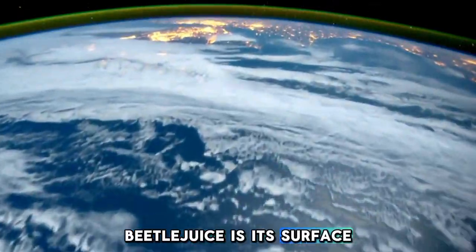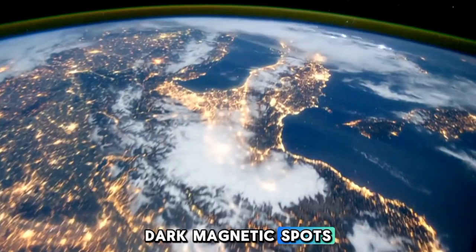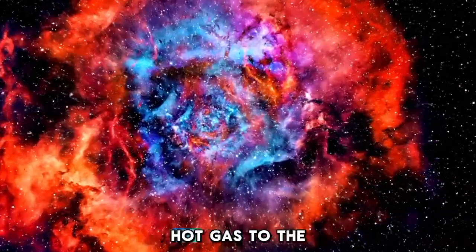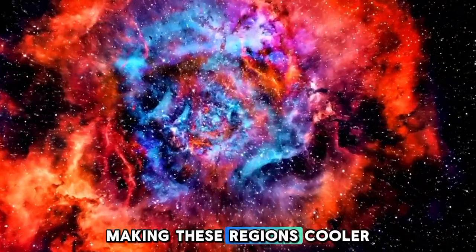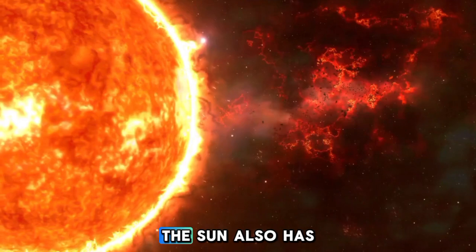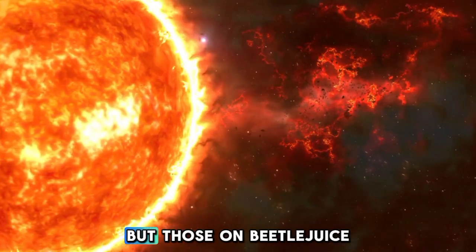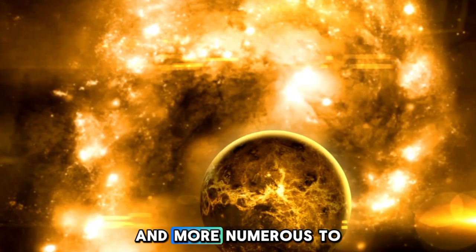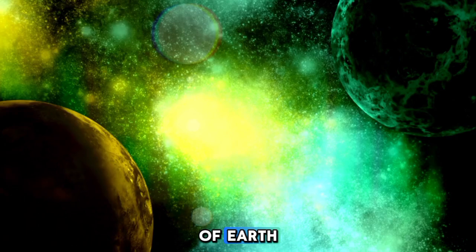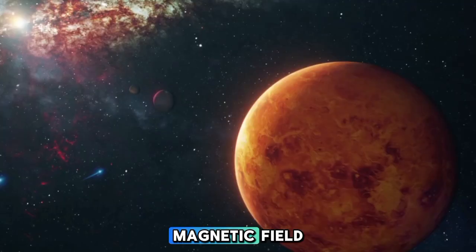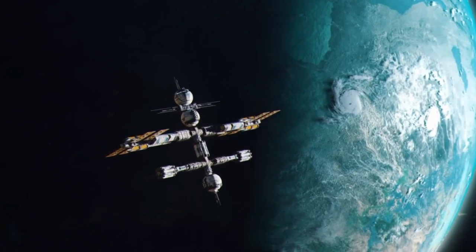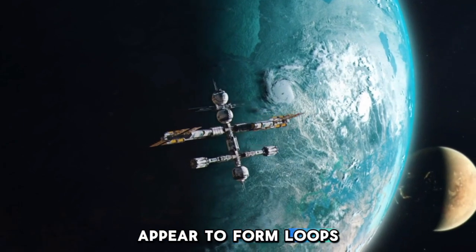A unique feature of Betelgeuse is its surface, which is covered in dark magnetic spots. These spots, with magnetic fields far stronger than those on the Sun, disrupt the flow of hot gas to the star's surface, making these regions cooler. This explains why Betelgeuse is cooler than the Sun despite its massive size and luminosity. The Sun also has dark magnetic spots, but those on Betelgeuse are significantly larger and more numerous. Some spots on Betelgeuse are twice the size of Earth. Betelgeuse has a magnetic field many times stronger than that of the Sun. This strong magnetic field is why the outer layers of Betelgeuse, when observed through telescopes, appear to form loops or arcs.